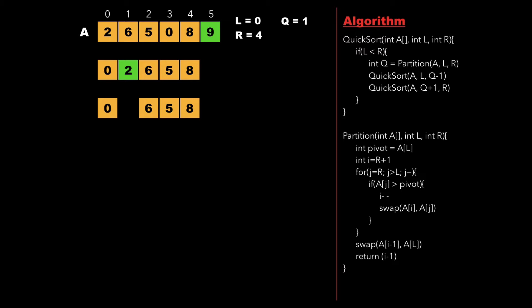Now let us consider the subarray 0 and call the partition function for it. The pivot is 0, and as we know that 0 is already at its correct location, we proceed further and consider another pivot as 6, and initialize i to R plus 1 which is 5. Now again we run a for loop from j equal to 4 to 2 and check whether A[j] is greater than pivot. Since 8 is greater than 6, we decrement i and swap 8 with itself. Now j points to 5, and since 5 is not greater than pivot we decrement j. Since j is not greater than L we exit the for loop and swap A[i-1] with A[L], that is we swap 6 with 5. Now 6 is inserted at its correct location and the subarray 5, 6, 8 is partitioned into left partition as 5 and right partition as 8.